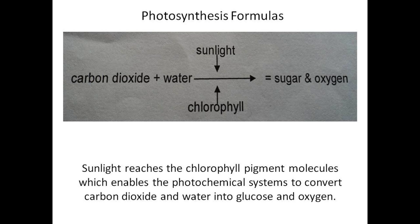Sunlight reaches the chlorophyll pigment molecules, which enables the photochemical systems to convert carbon dioxide and water into glucose and oxygen.